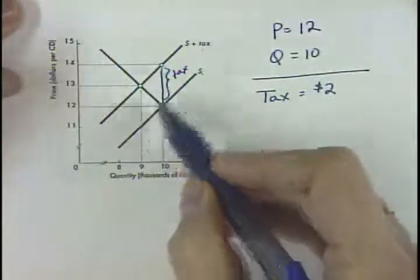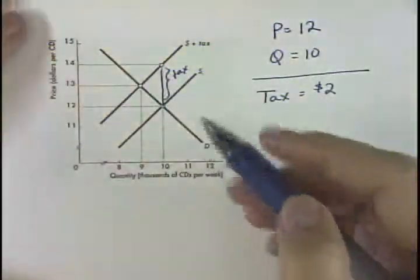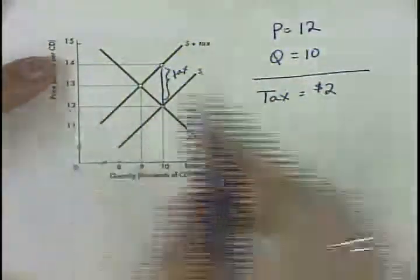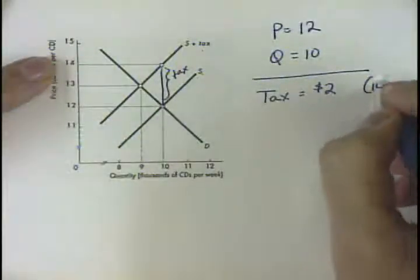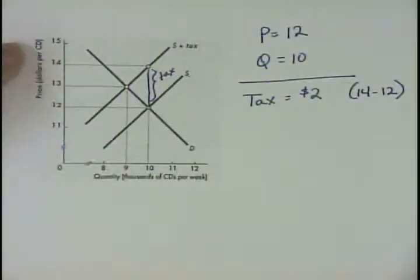We could have done that here, we could do that here. Whatever the vertical distance here, that's how we determine what the tax is. So in this case, the tax we could have calculated: $14 minus $12. $14 minus $12 was the tax. It was $2 for the tax.